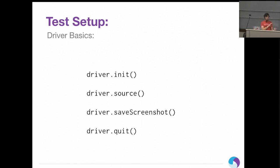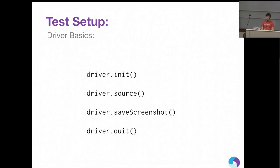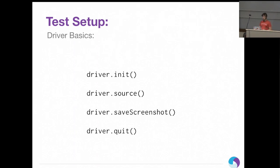I'm going to go over a couple basic functions on the driver object you create using wd.js. The init function is where you pass your desired capabilities as an object. I'm going through the callback versions of these functions, but if you create a promise driver, all of these functions are exactly the same but return promises instead. Init takes your desired capabilities, you pass it a callback — all node-style callbacks, error first — and it receives the driver object you continue using.